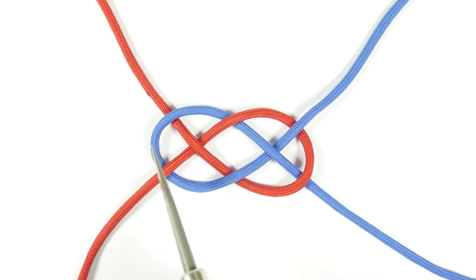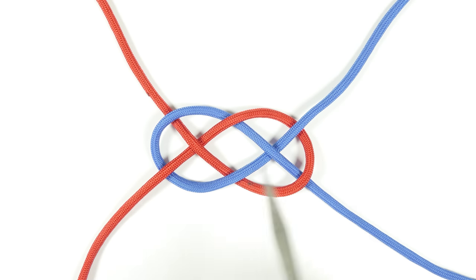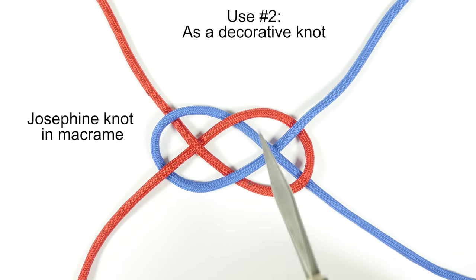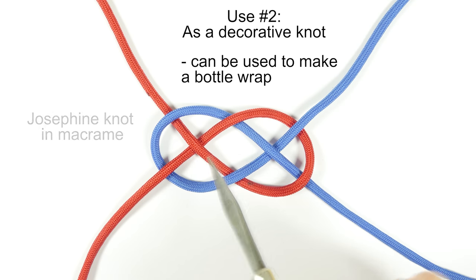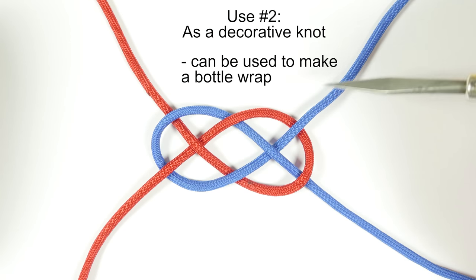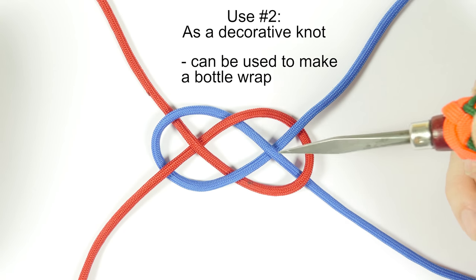The second use for the Carrick Bend is not common in the paracord crafts. But in crafts like macrame, the Carrick Bend, also known as the Josephine Knot, is used as a decorative knot, usually where the strands are not going to get under a lot of stress, which would distort the knot.